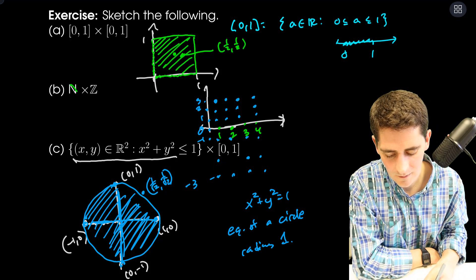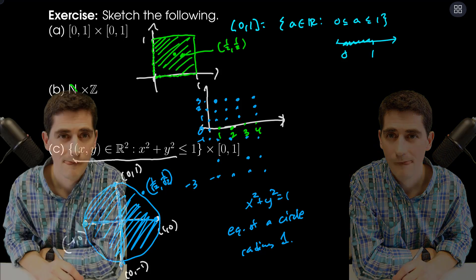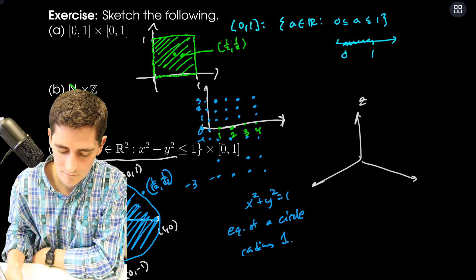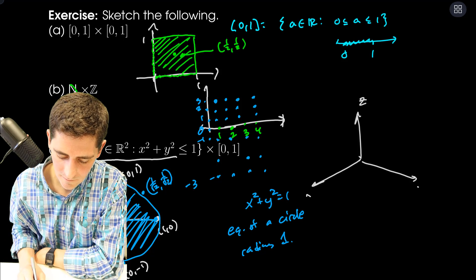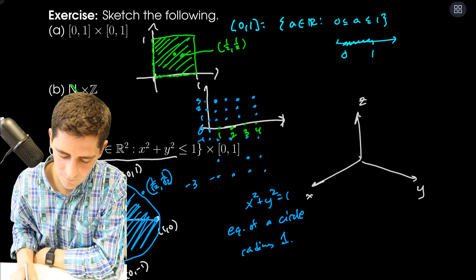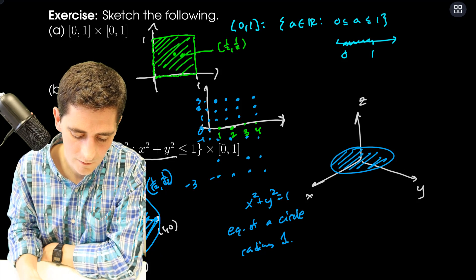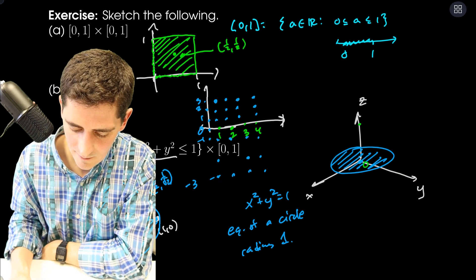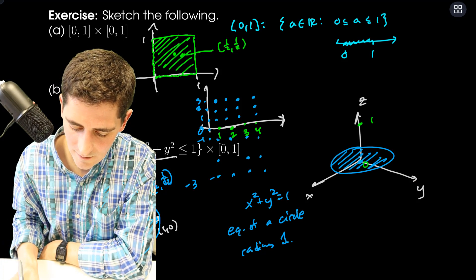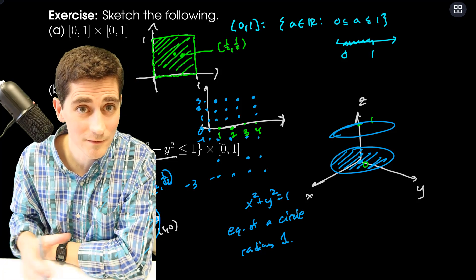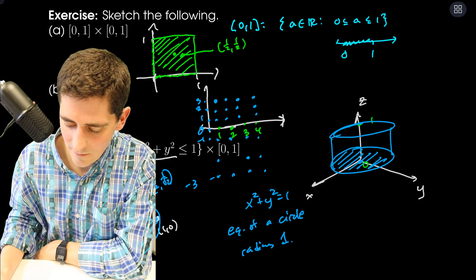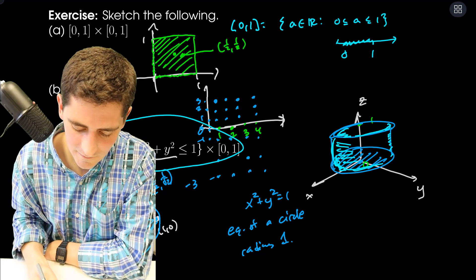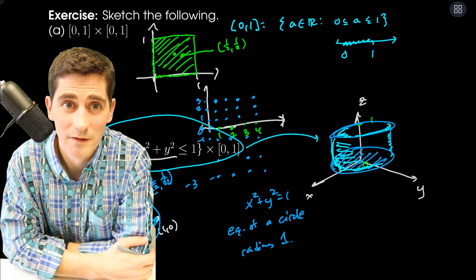So we'll add a Z direction. My XY plane has the unit disk we just drew, and my Z coordinate has to go from 0 to 1. Anything that satisfies the unit disk condition in the XY direction is okay for any height from 0 to 1, so I end up with a cylinder. That set is the geometric cylinder.